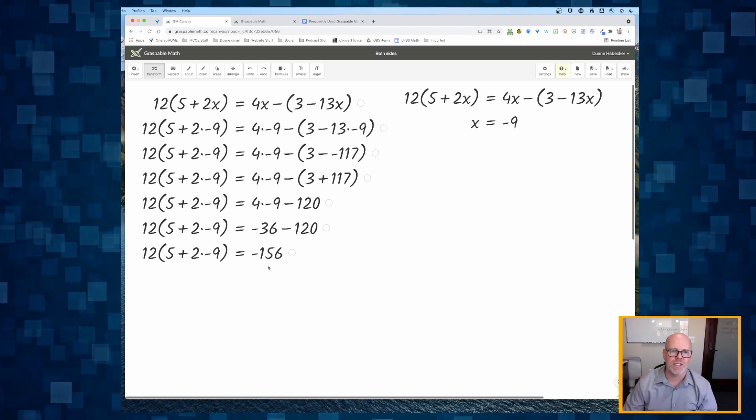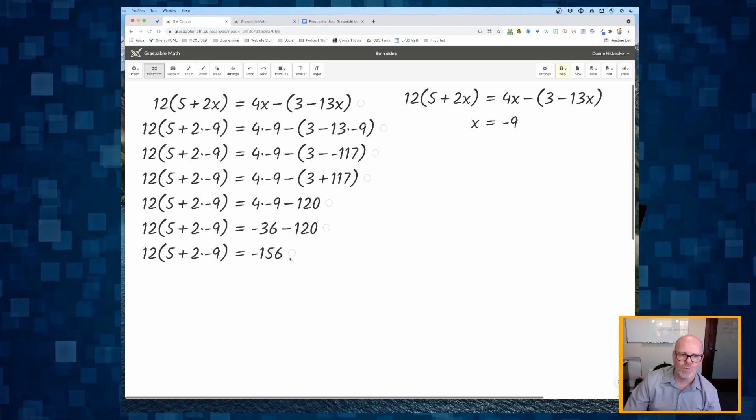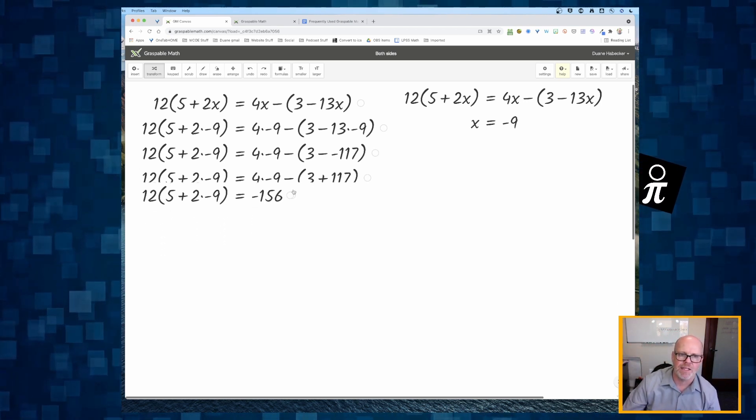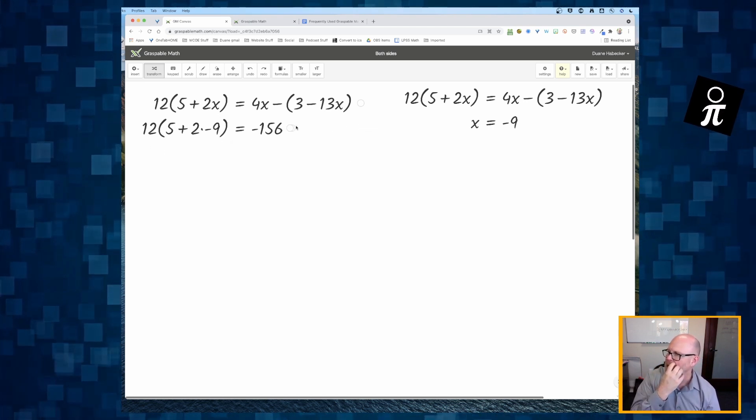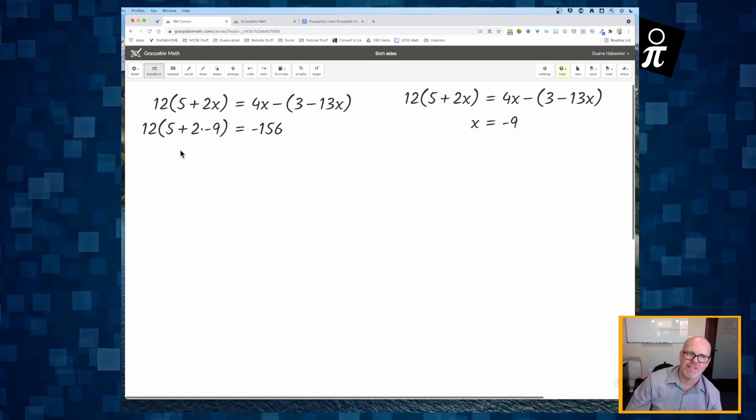And so now the right side of that equation is equal to negative 156. I can click on that circle and drag it up to kind of hide all of that other work. And now I can really start focusing on the left side.